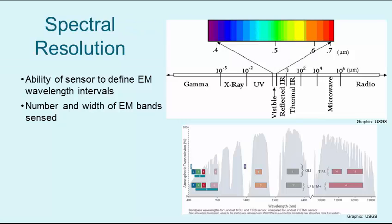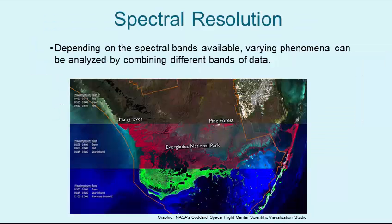Spectral resolution is the ability of a sensor to detect energy along the electromagnetic spectrum at differing intervals and widths, referred to as bands. The bottom diagram illustrates this concept for the spectral bands on Landsat 7 and 8. These multispectral scanners result in the ability to combine bands of information to examine specific terrestrial phenomena. The graphic below shows a collection of different multispectral image combinations and includes a true color image and a color infrared image in the middle.